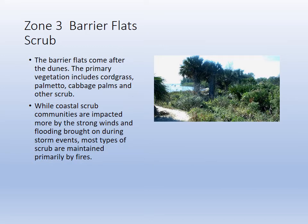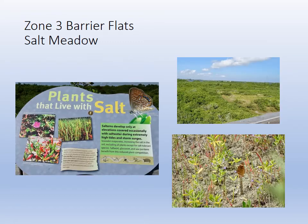There are dunes held together in this case by sea oats — windswept but held together by vegetation. Behind that, the barrier flats, the scrub, the dune flats. Typical plants include palms, sea grapes, palmetto, beach scrub. Behind there you can find your salt meadows or salterns — little depressions that become too salty for trees. Only super salt-tolerant plants like seaside purslane and little stunted plants can grow there. It's a harsh environment.